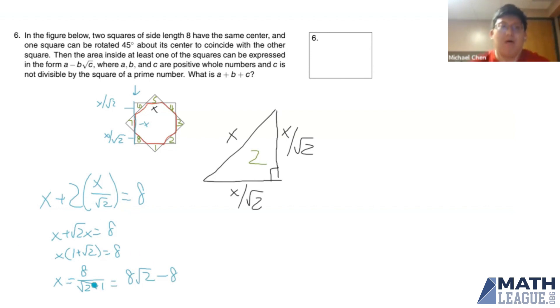Which means that is also equal to 8 root 2 minus 8 by rationalizing the denominator. We know that the hypotenuse of one of these isosceles triangles is going to be equal to 8 root 2 minus 8. And therefore, the legs of this triangle, or x divided by root 2, is therefore 8 minus 4 root 2.